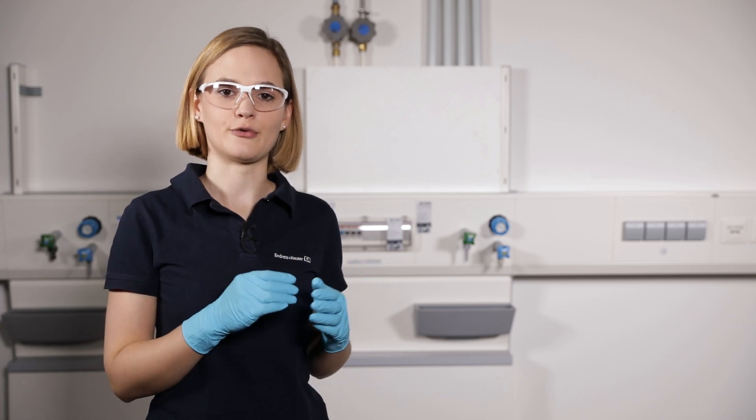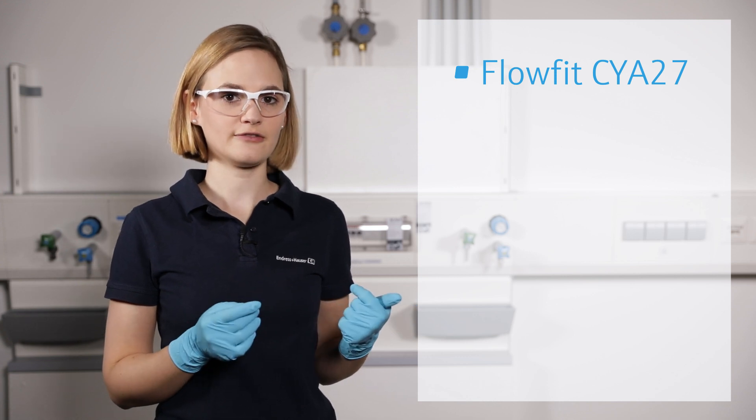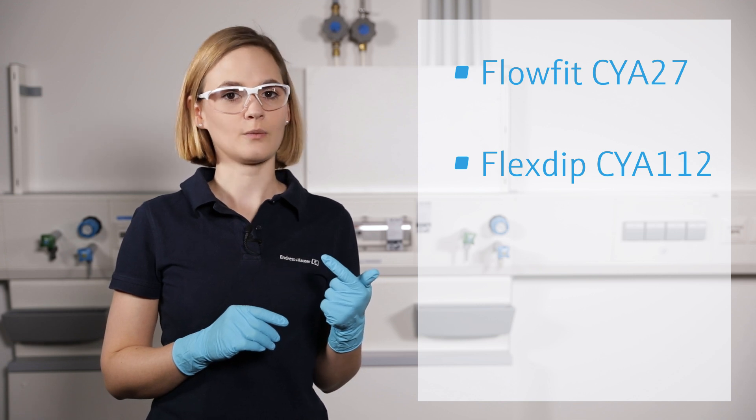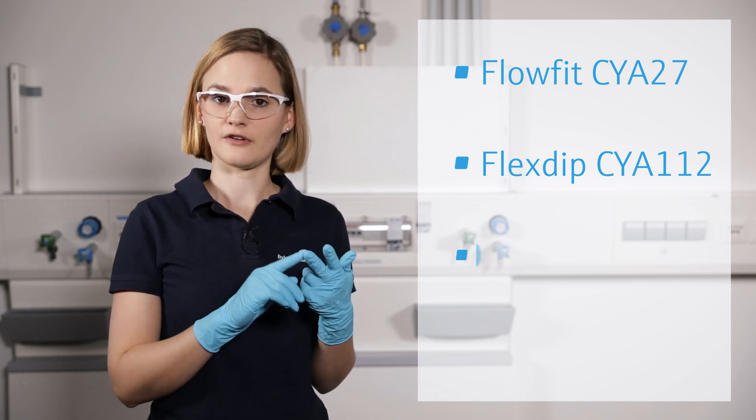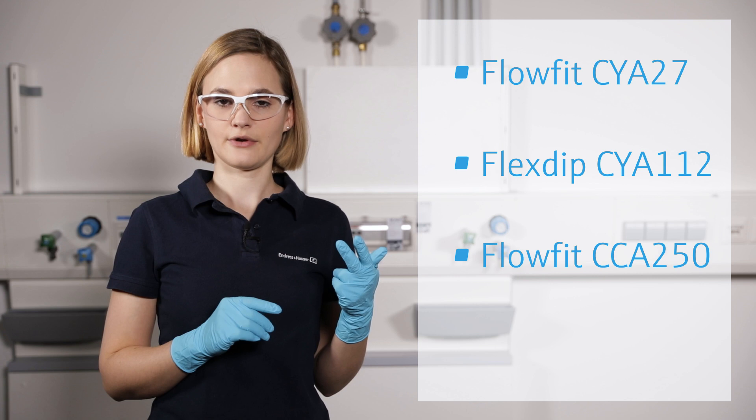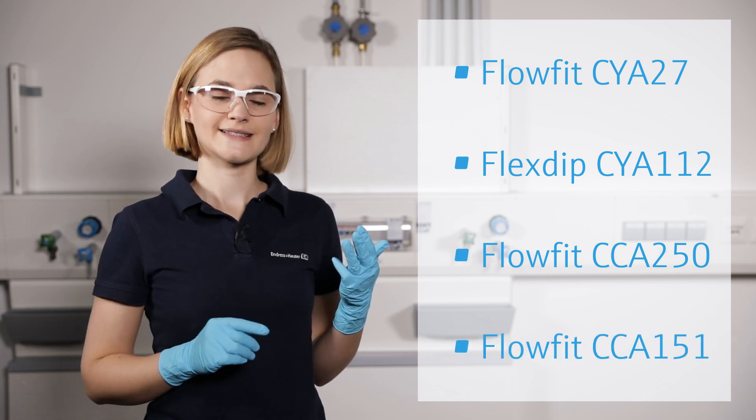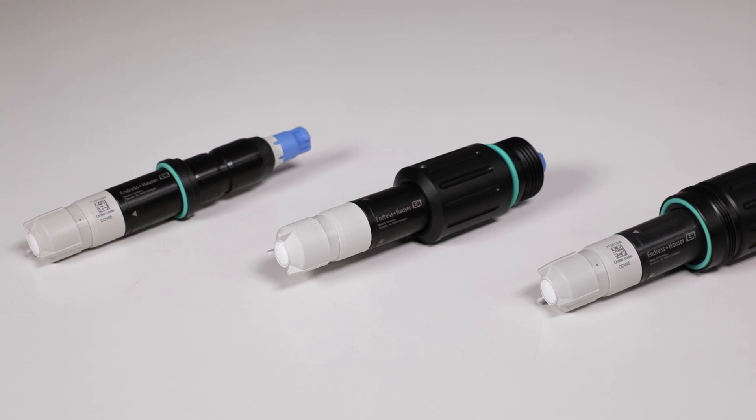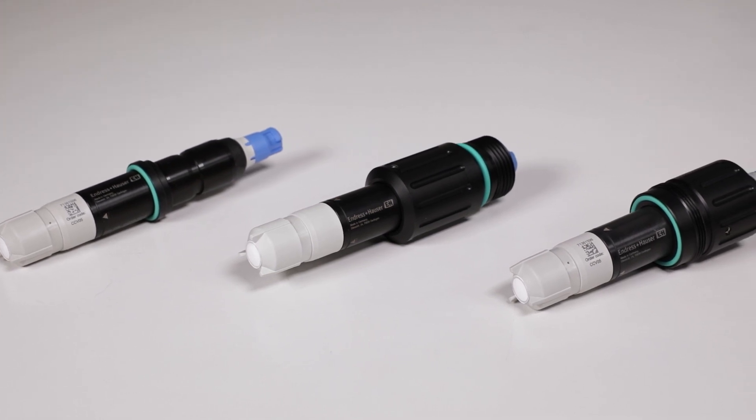The sensor needs a certain flow against the membrane and therefore it must be installed into one of the following assemblies. It must be installed in the Flowfit CYA27 or alternatively it can be installed in the FlexStep CYA112 on one of the previous assemblies, Flowfit CCA250 or Flowfit CCA151. For each assembly a different mounting adapter is necessary. The correct adapter must be chosen in the order code of the CCS51D.